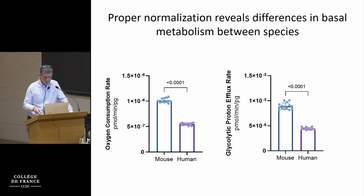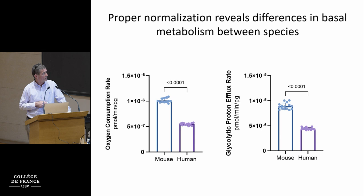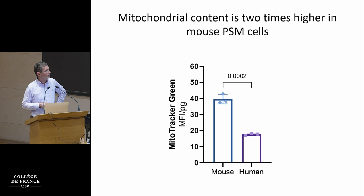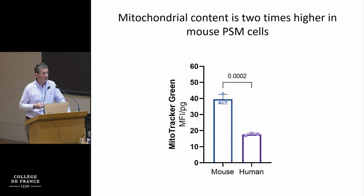Timo was able to measure very precisely the volume of cells in the two species, the mass, and the density. The cells exhibit very similar densities. The mass is about twice as high for human cells, and the volume is also twice as high for human cells. When you normalize the seahorse data by mass, the mouse cells' metabolism is twice as fast as human cells, and that's also true for the glycolytic rate. One simple way to explain this is that there are more mitochondria in mouse — and that's actually the case: labeling cells with MitoTracker green, the density of mitochondria is much higher in mouse cells.